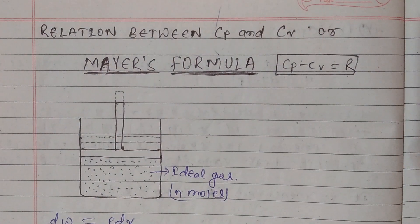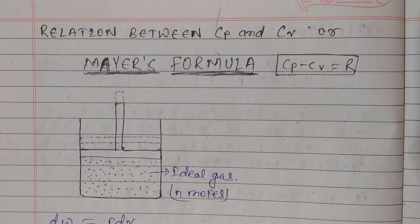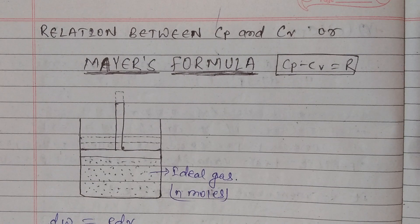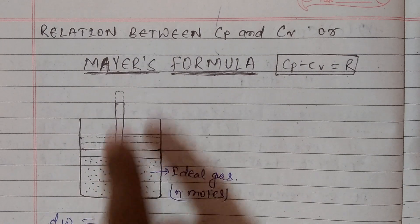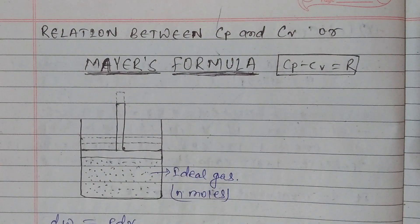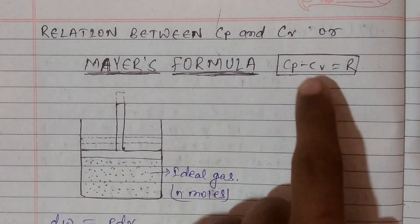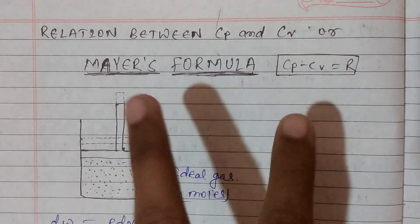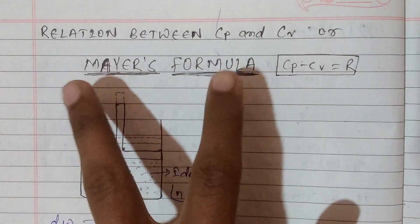Hello everybody! Welcome back to OLI. This is Subhas Adhikari. In this video, we have a relationship between CP and CV. It's called CP minus CV equals R. It's called Mayer's formula.